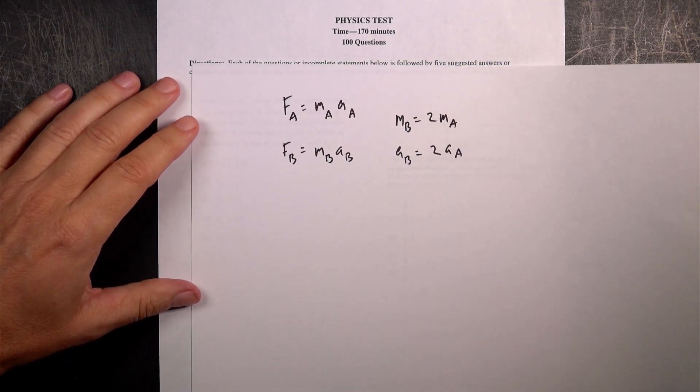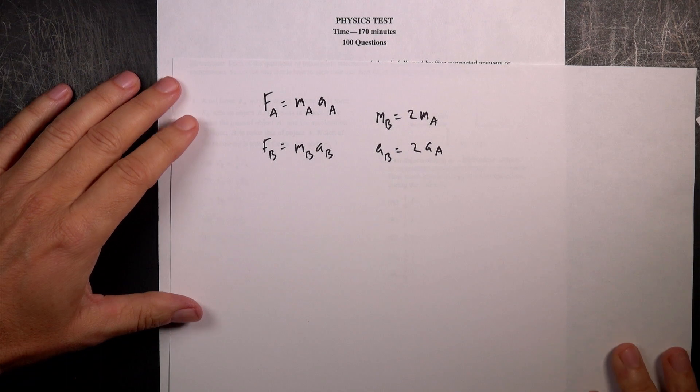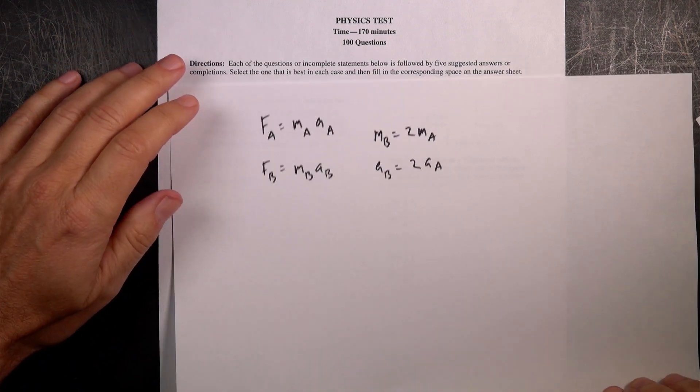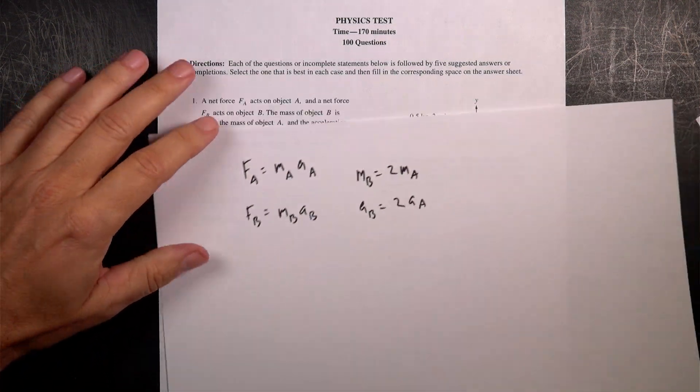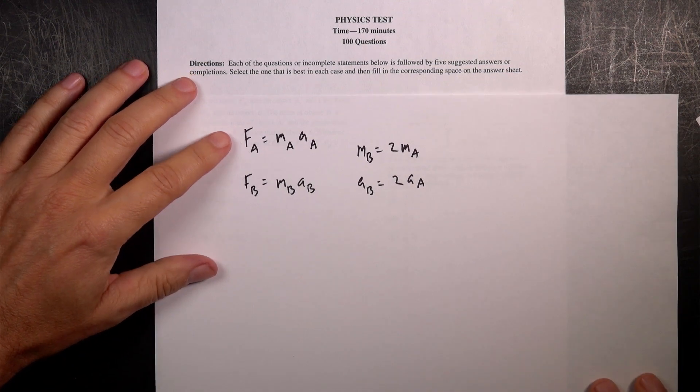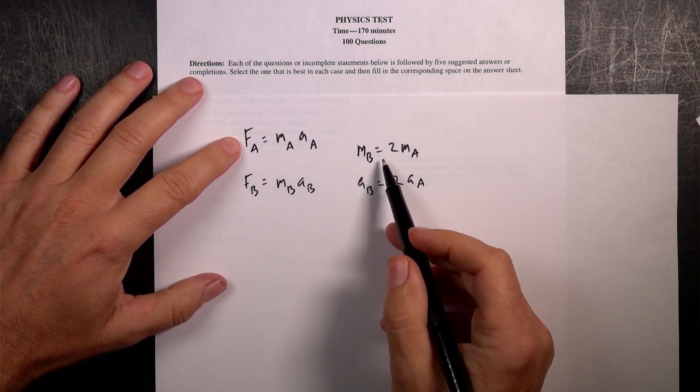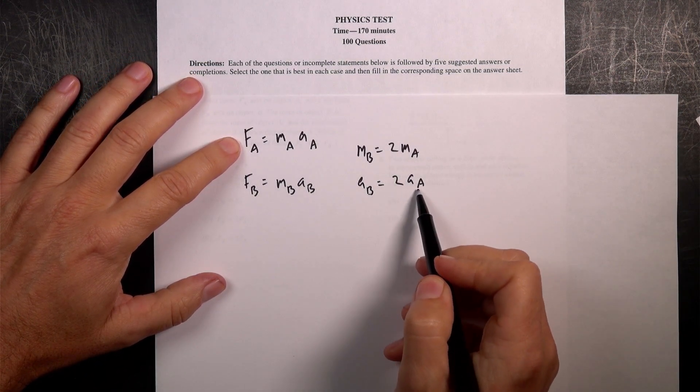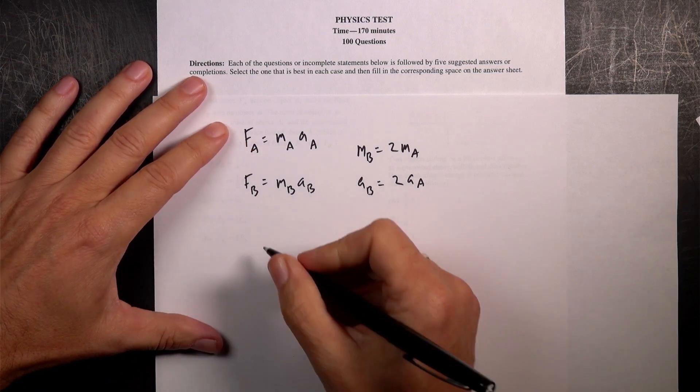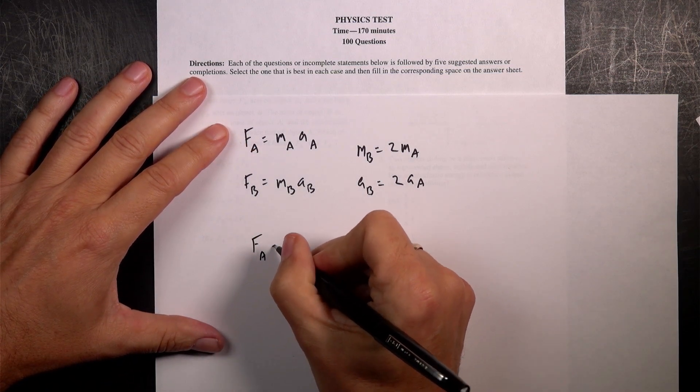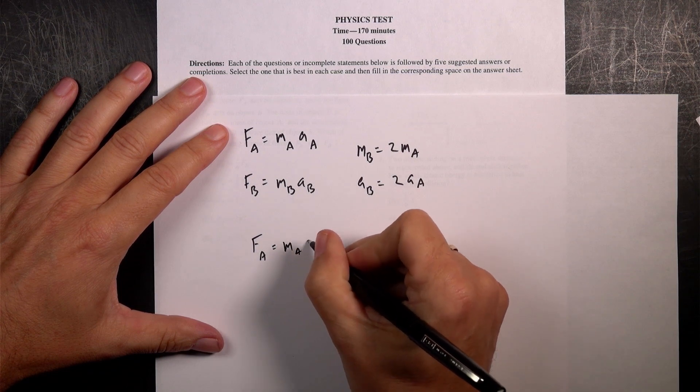So now let's just go ahead and substitute these values in and get two equations. So we want a relationship between these two FA and FB. That's what they're asking for. So if I rewrite FA, I'm going to put in this. I'm just going to leave it as it is. FA equals MA times AA.